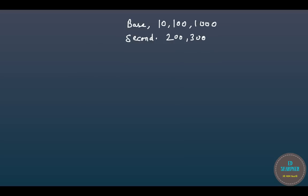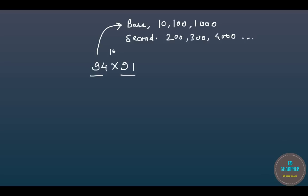The secondary base could be 200, 300, 400, 4000 — anything that is a multiple of the power of 10. Let us take an example first: 94 times 91. Now look at these numbers — I have chosen them to be near the primary base 100. Always remember, when you look at the numbers, you have to choose a base first. We have chosen a base of 100. Write down 94 and note how much less it is than 100 — it is 6 less, so write minus 6.